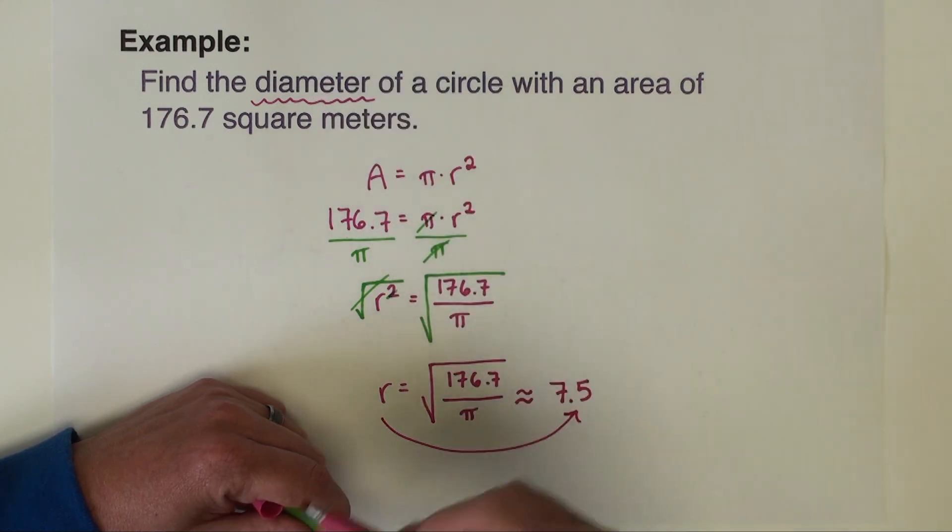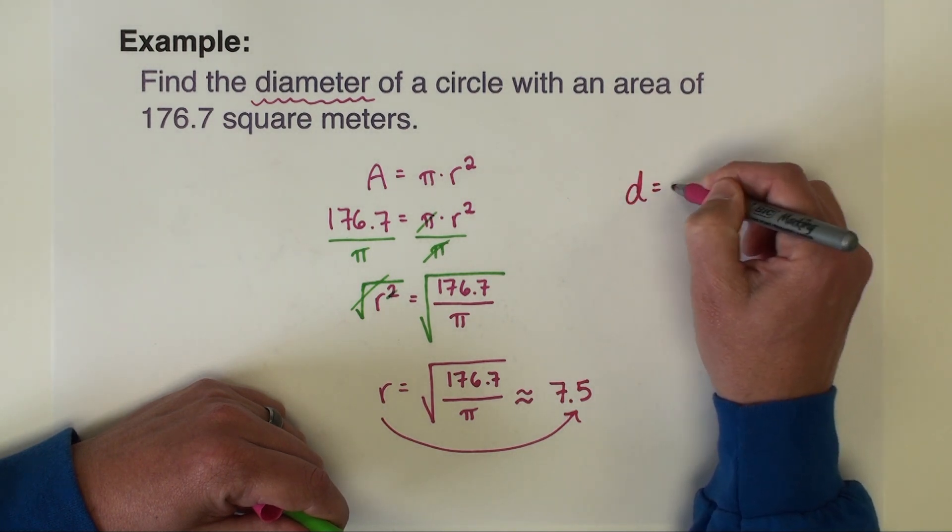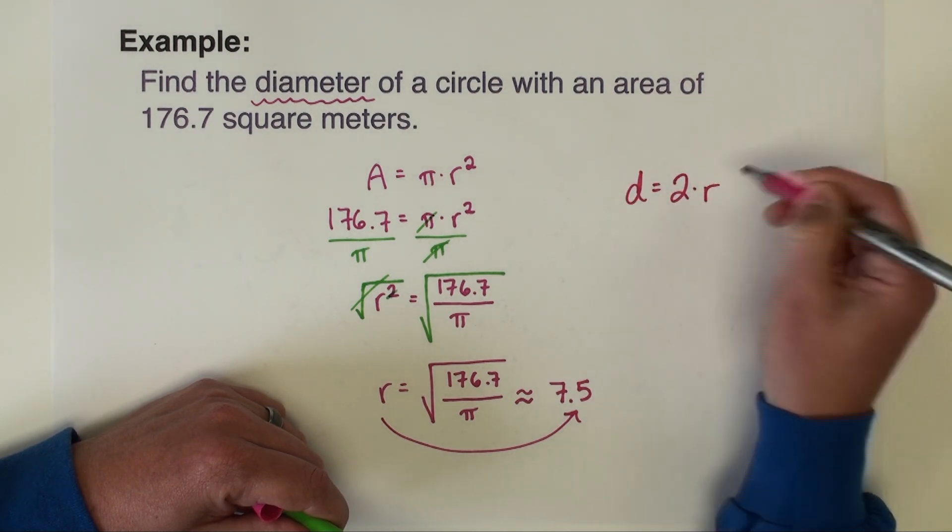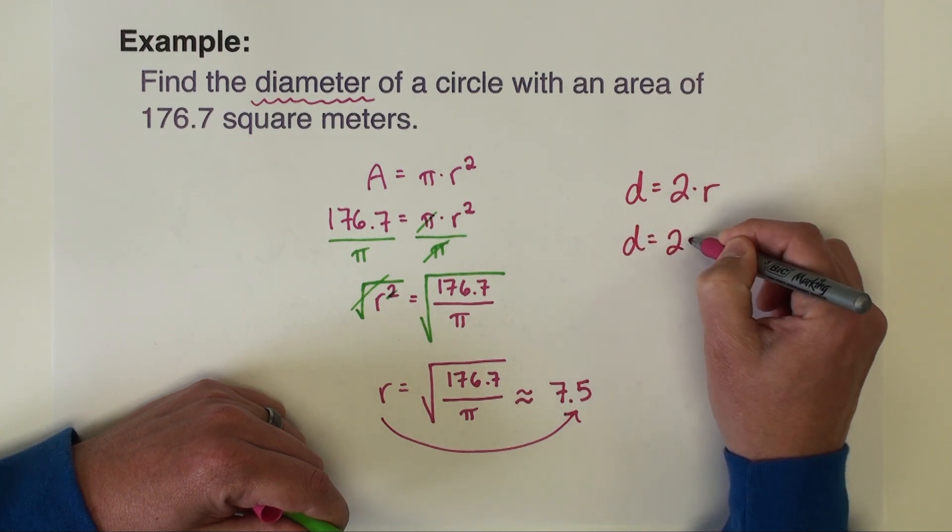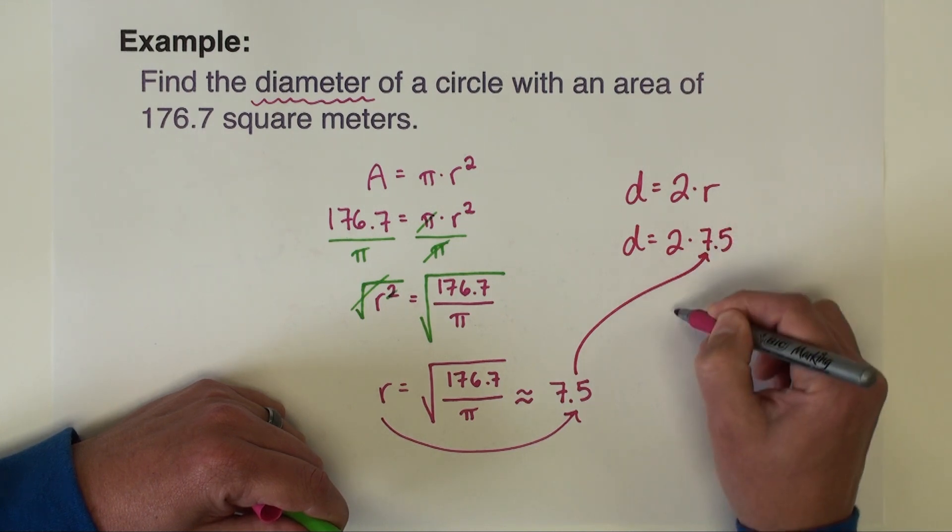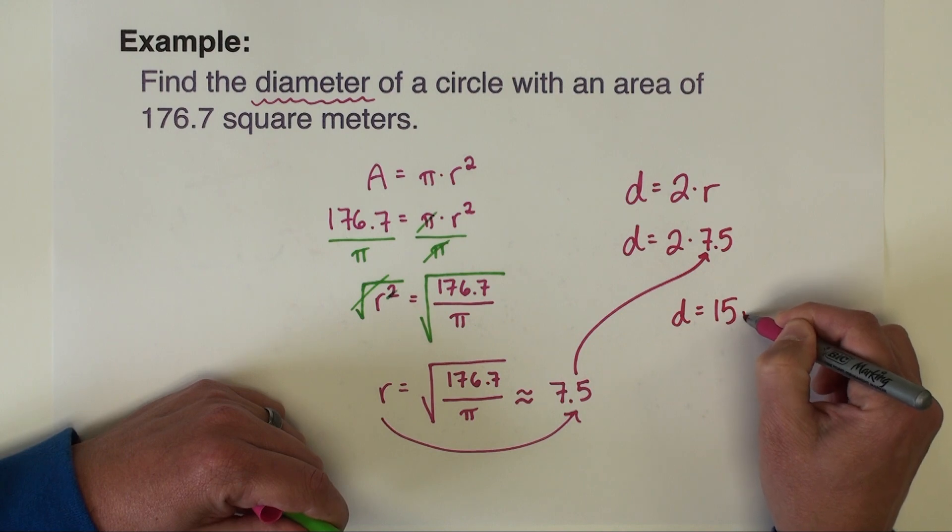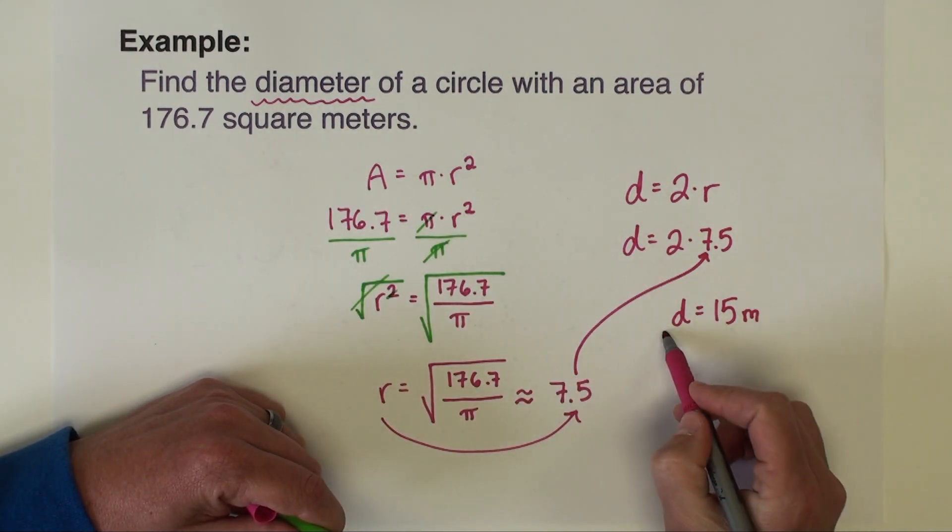We need diameter. So all we have to do now, the diameter of a circle is equal to twice the radius. So our diameter is going to be 2 times 7.5, which gives us a diameter of 15. Since the units of area are square meters, our units are going to be meters.